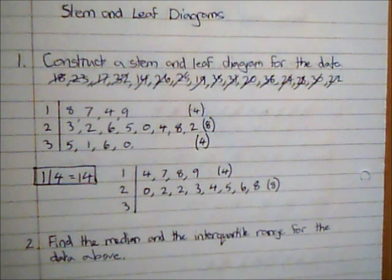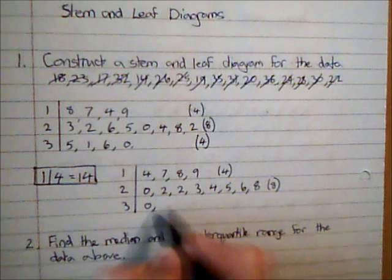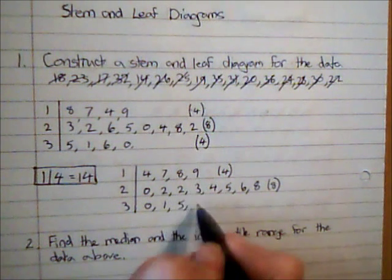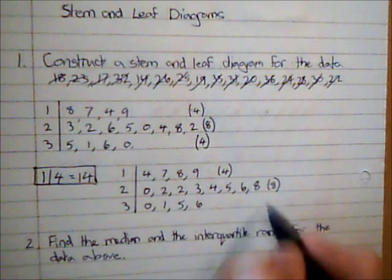And then finally I've got zero, one, five, and six, which is again four bits of data.